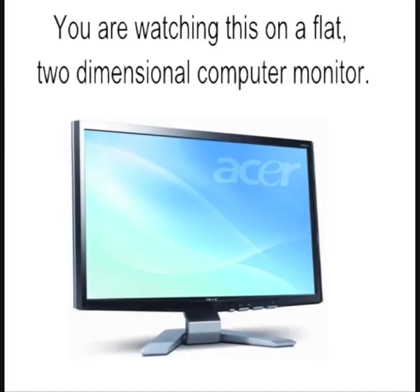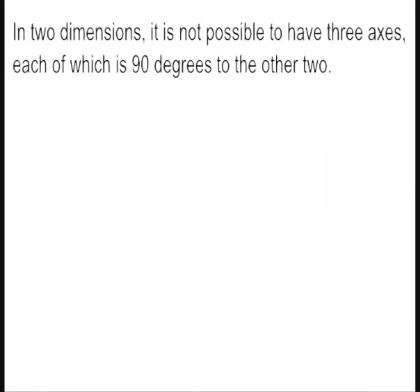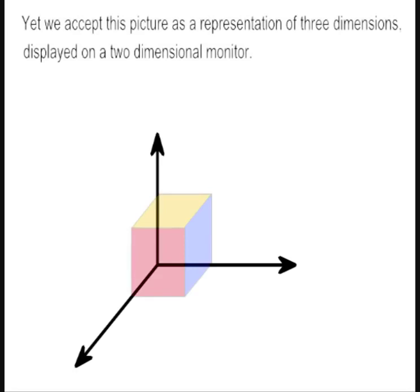You are watching this on a flat, two-dimensional computer monitor. In two dimensions, it is not possible to have three axes, each of which is 90 degrees to the other two. Yet we accept this picture as a representation of three dimensions.